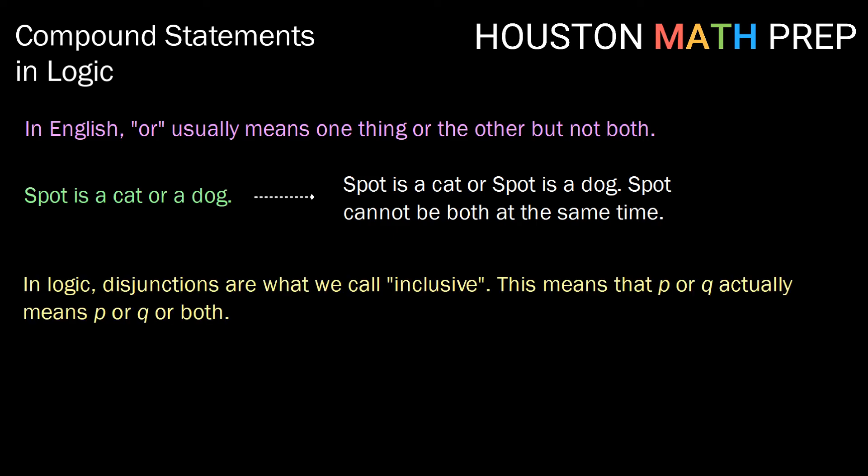However in logic, disjunctions or statements with or are what we call inclusive. That means that P or Q in logic actually means P is true or Q is true or both are true.